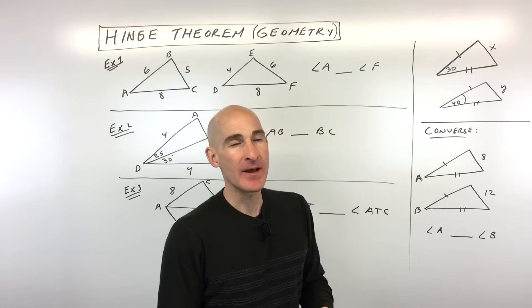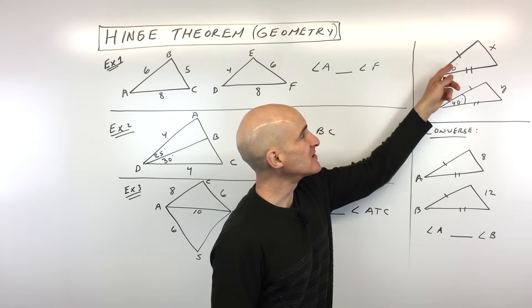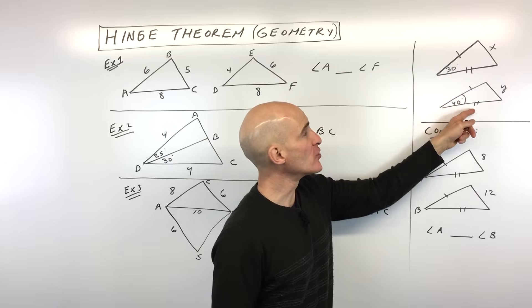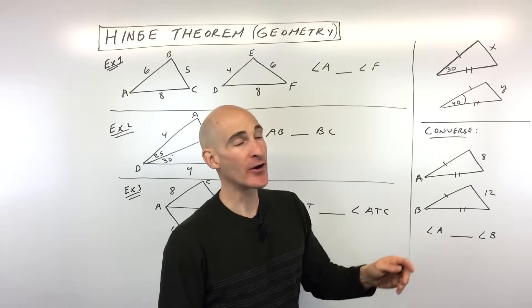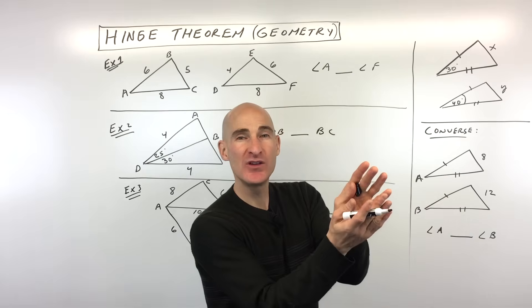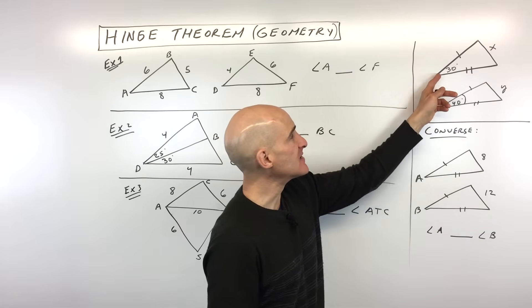Basically what the hinge theorem says is that if we have two sides in one triangle that are congruent to two sides in another triangle, but the angle that's in between those two congruent sides is different.